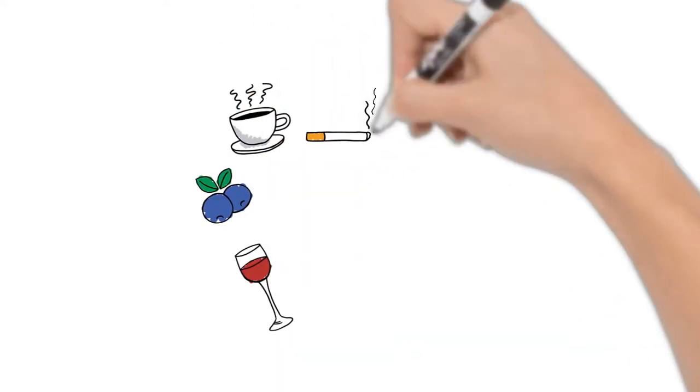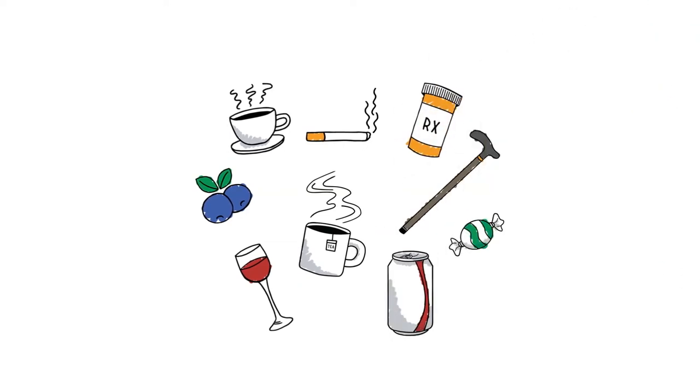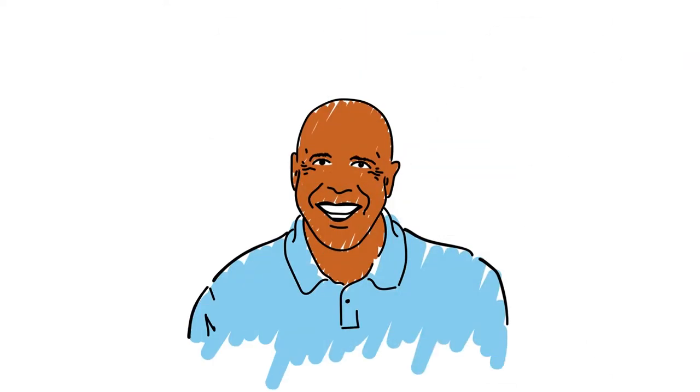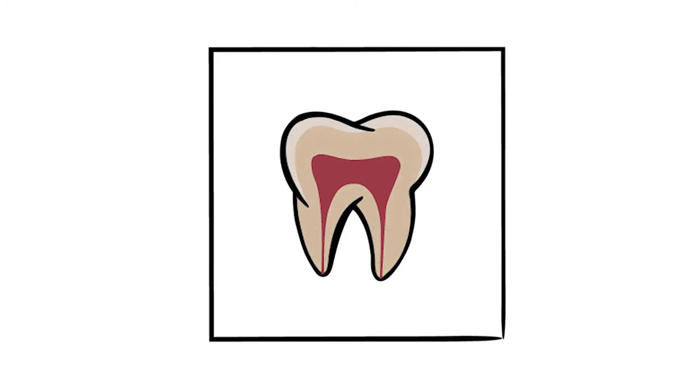Enamel can be discolored over time by outside sources like coffee, tea, tobacco, and other foods and beverages. Also, as we age, our enamel becomes more translucent, causing more dentin to show through, which makes the overall appearance of the tooth look darker.